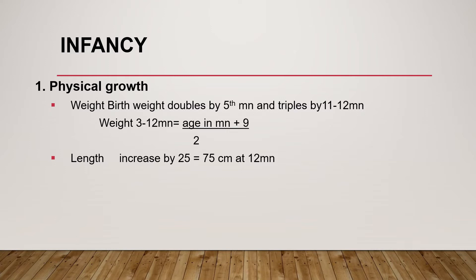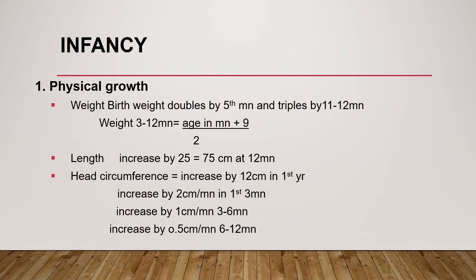Head circumference increases by 12 centimeters in the first year: two centimeters per month during the first two months, one centimeter per month during three to six months, then 0.5 centimeters from six to 12 months — for a total of 12 centimeters in the first year.